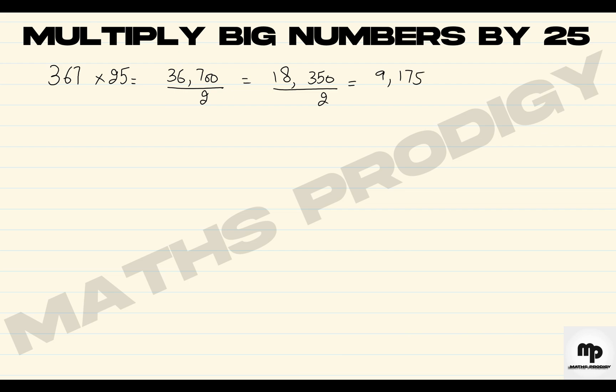Now let's take another example of a four-digit number, which is 8,694 times 25. So that will be 869,400. Put commas, make it half. There will be 434,700. Half it again, there will be 217,350.